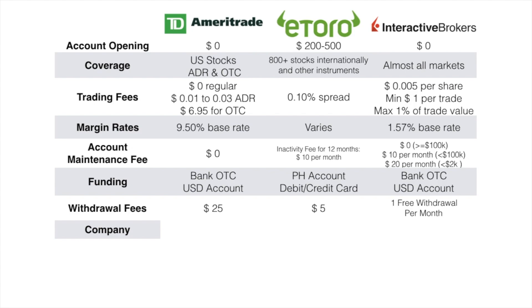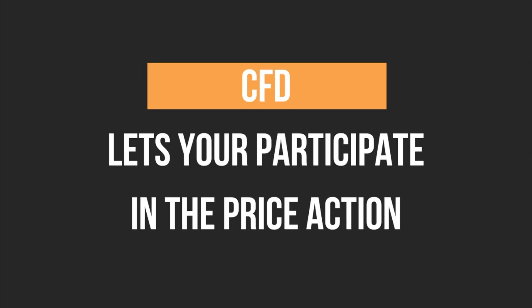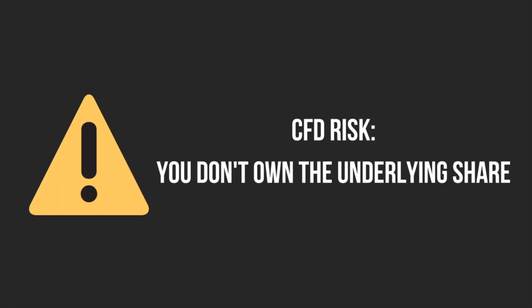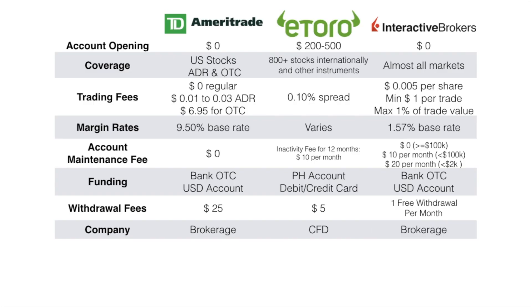TD Ameritrade is a traditional brokerage. eToro is a CFD provider — CFD stands for Contract for Difference, which lets you participate in the price action of a stock, but you don't own the underlying share. This is a major risk: if eToro goes bankrupt, you could lose the money you have in eToro. With traditional brokers like TD Ameritrade or Interactive Brokers, you only lose the amount invested if the company you invested in goes bankrupt.